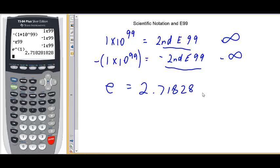I hope this is helpful in especially using 2nd E 99 and negative 2nd E 99 for a representative for positive infinity and negative infinity. This concludes this video.